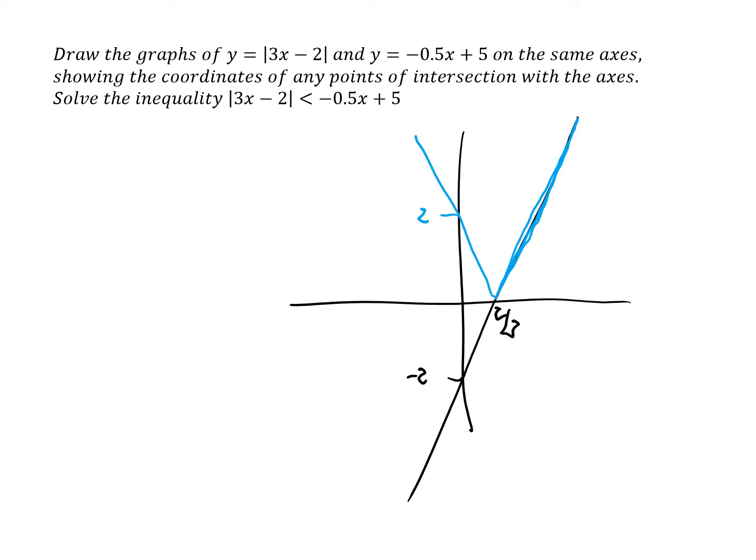The graph of y equals minus 0.5x plus 5. It's a linear graph which cuts the y-axis at 5. It's got a negative gradient.